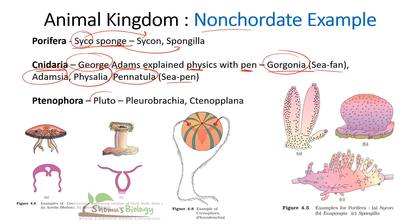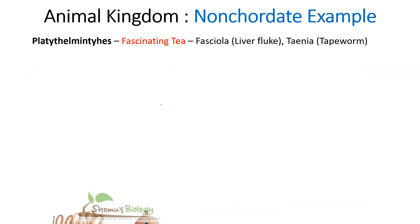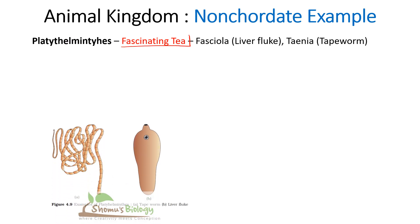For Ctenophora, remember 'Pluto': PL gives Pleurobrachia, and TE gives Ctenoplana (Ctenophora starts with C). For Platyhelminthes, remember 'Fascinating T': Fasciola (liver fluke) for F, and Taenia (tapeworm) for T. These are the key examples of Platyhelminthes.